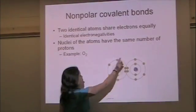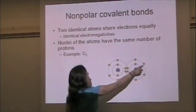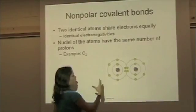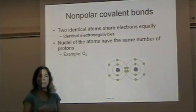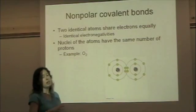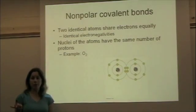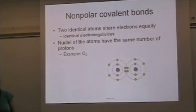So these electrons are going to be attracted to these eight protons, but they're going to be equally attracted to these eight protons and they're going to spend an equal amount of time rotating around both atoms. This is not true, however, if we have two atoms of different elements. Let's take a look at that.